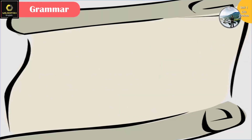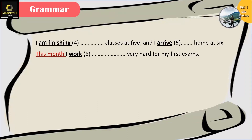I leave the flat at night and walk to the university - عم أحكي هون عن حقائق وعادات أنا بمارسها بحياتي اليومية فبستخدم معهم حاضر بسيط. I'm finishing classes at 5 - طبعا غلط لأنه أنا لسه عم بحكي عن العادات اللي بعملها باليوم فما بستخدم الحاضر المستمر وإنما الحاضر البسيط.